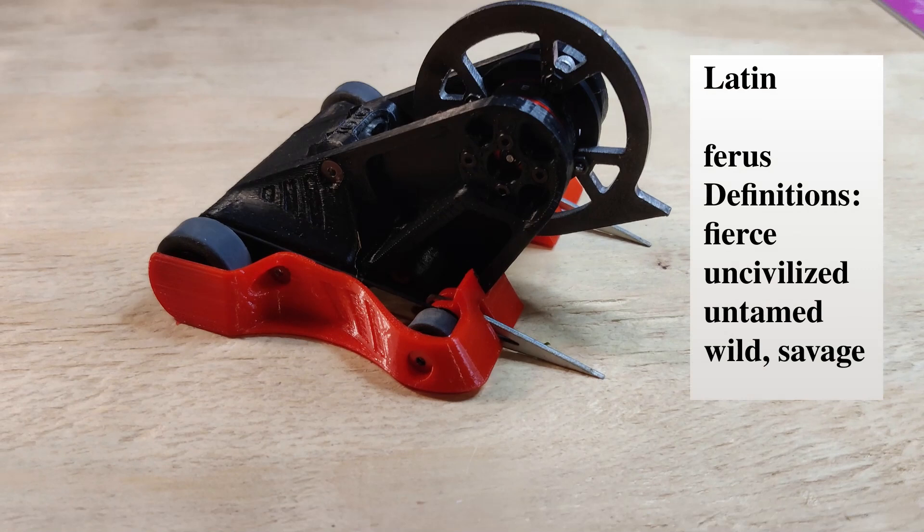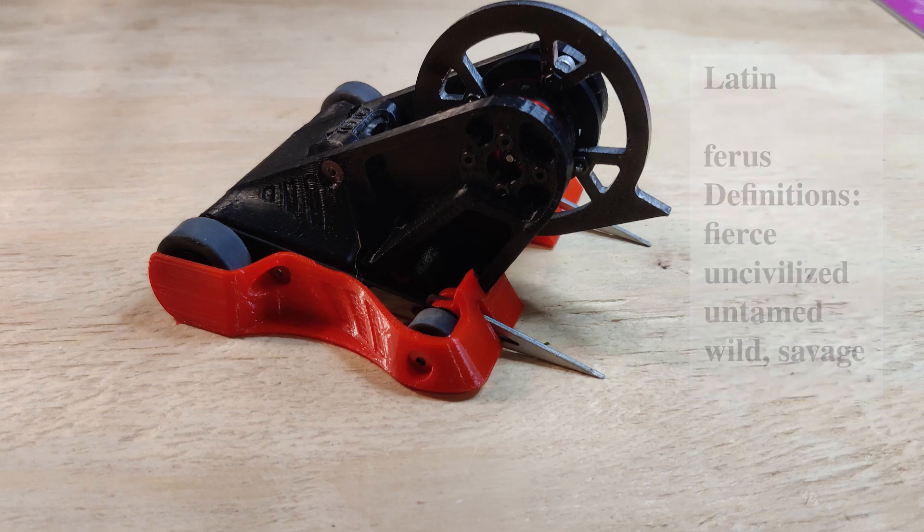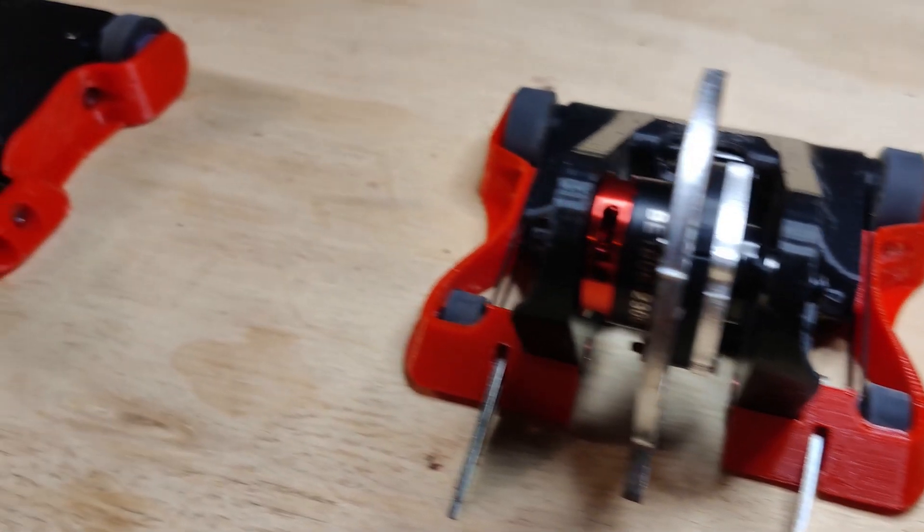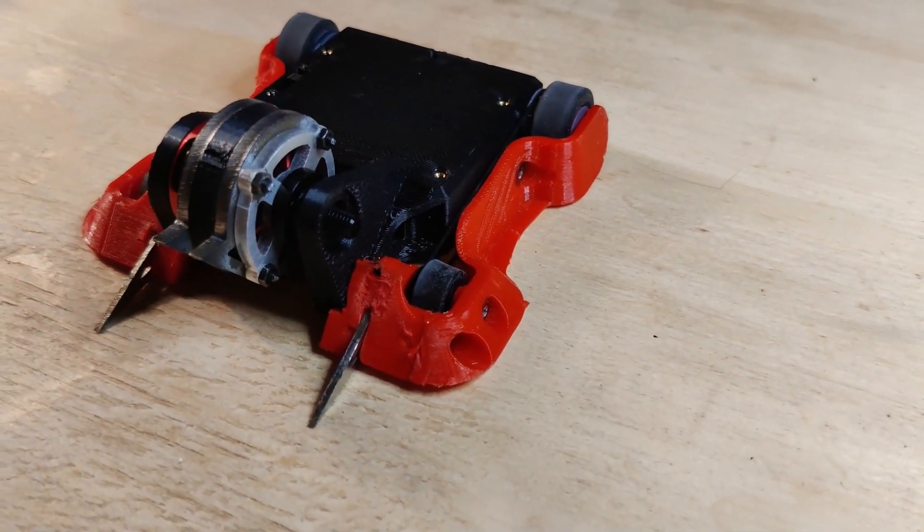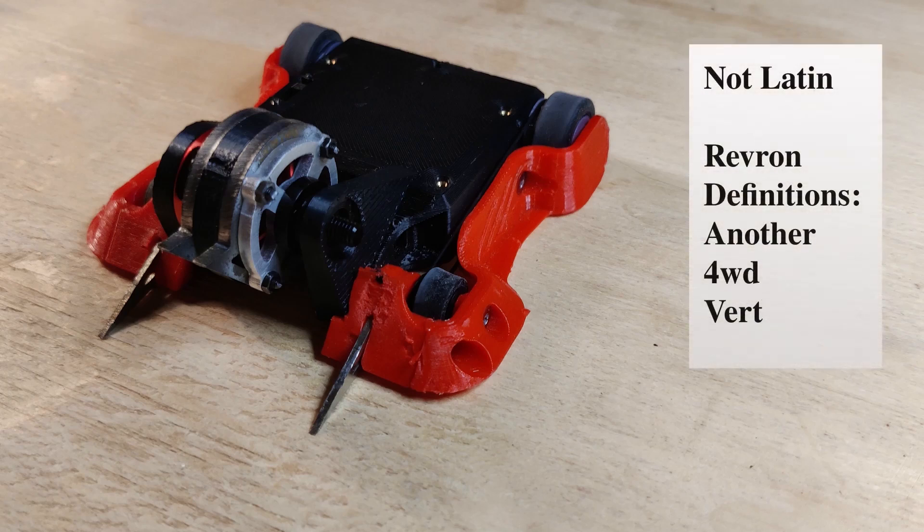TPU side armor, strategic use of aluminum standoffs and belted drive. Which is a bit strange really because for the last couple of years I've been competing using a four-wheel drive vertical spinner running an 1806 weapon motor, 180mAh 2S battery, TPU side armor and strategic use of aluminum standoffs. It's called Revron.